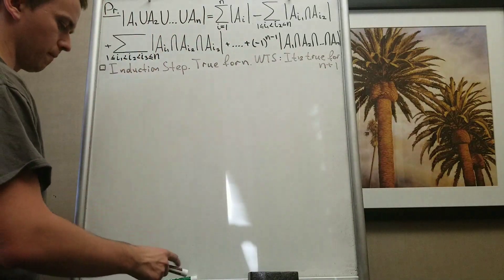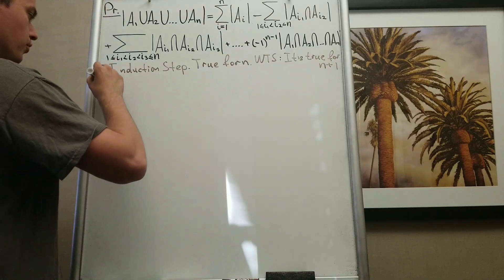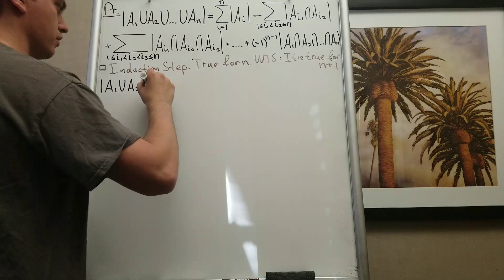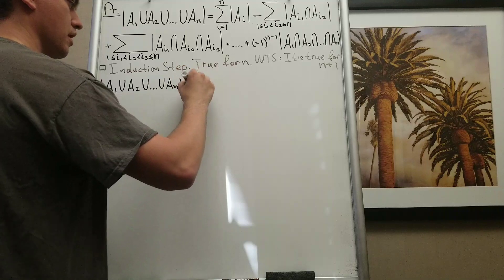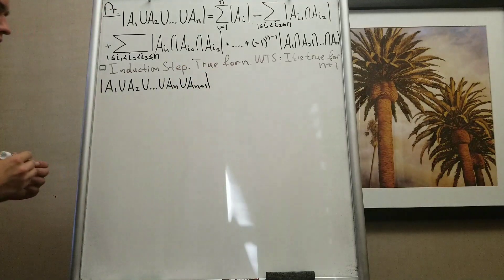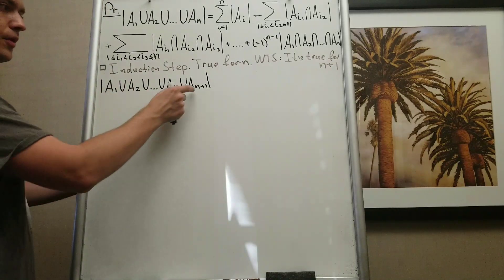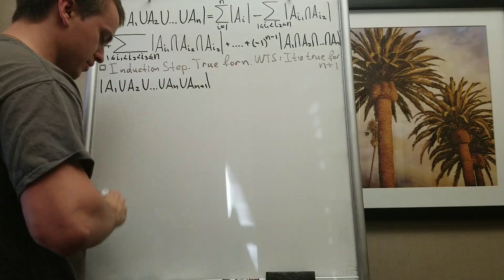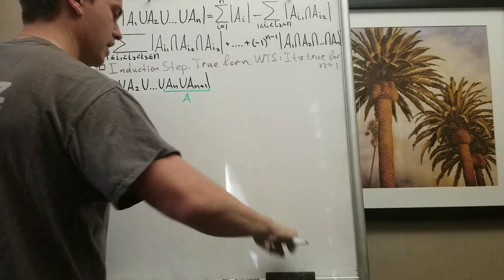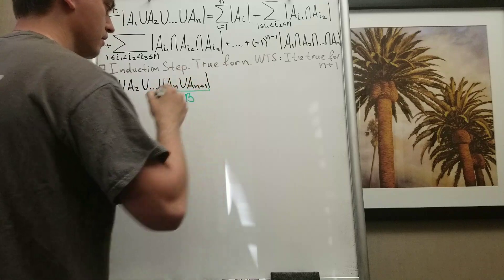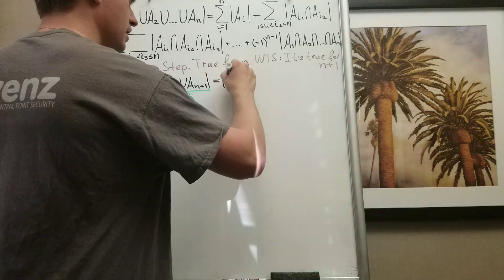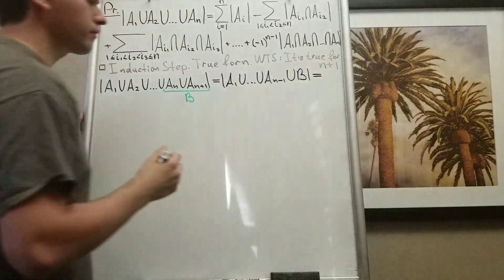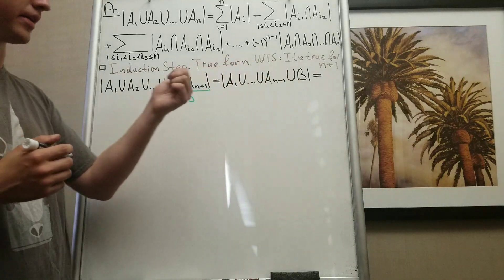To prove the formula holds for n plus 1, I write the union A₁ ∪ A₂ ∪ ... ∪ Aₙ ∪ Aₙ₊₁, which has n plus 1 factors. I take the last two elements and name their union as a single set b. So I write the expression as A₁ ∪ A₂ ∪ ... ∪ Aₙ₋₁ ∪ b, and now inside the cardinality I have n sets, so I can apply the induction hypothesis.